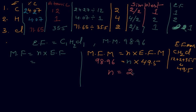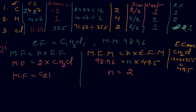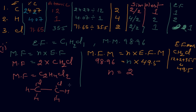Dividing 98.96 by 49.5, we find n = 2. Putting this into the equation — n = 2 and empirical formula = CH₂Cl — the molecular formula becomes C₂H₄Cl₂. Opening this formula, we get 2 carbons, 4 hydrogens, and 2 chlorines, which is 1,2-dichloroethane.